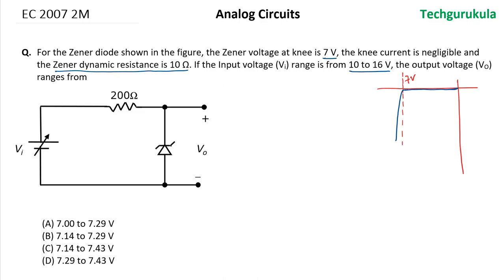Now the first question for the given range: will the Zener diode be in the breakdown region of operation or not?